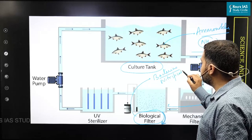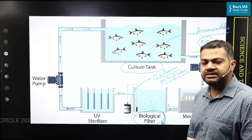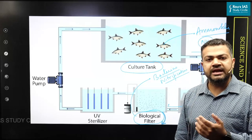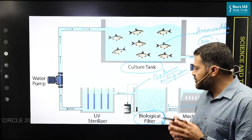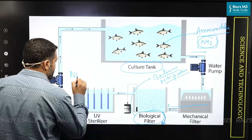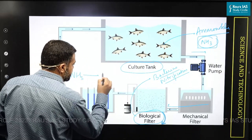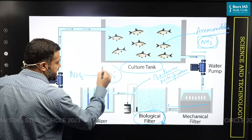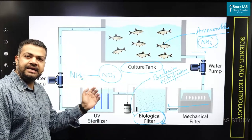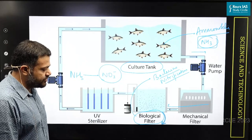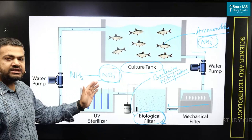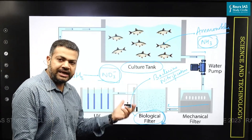Nitrification is the process where we use certain bacteria. Examples include nitrococcus, nitrosomonas, and nitrobacter. These are the bacteria that convert the harmful ammonia into nitrates. I'll write the equation here. This ammonia is eventually converted into nitrates — first from ammonia to nitrites, and then further to nitrates. Biofilters are essentially nitrifying bacteria that convert ammonia into nitrates.